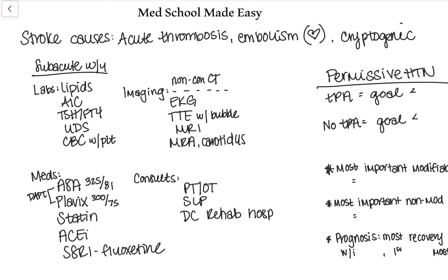Imaging-wise, we already talked about how you're going to get a non-contrast CT right when they walk into the hospital to determine bleed or no bleed. Then other imaging you want to get is an EKG, which is really helpful because it can show you if a patient has AFib, or maybe they had a subacute MI, or some other cardiac reason that could be the source of their stroke. Also get a TTE or TEE with a bubble study. This will show you if a patient has a patent foramen ovale, which is definitely a source of cardioembolic strokes.